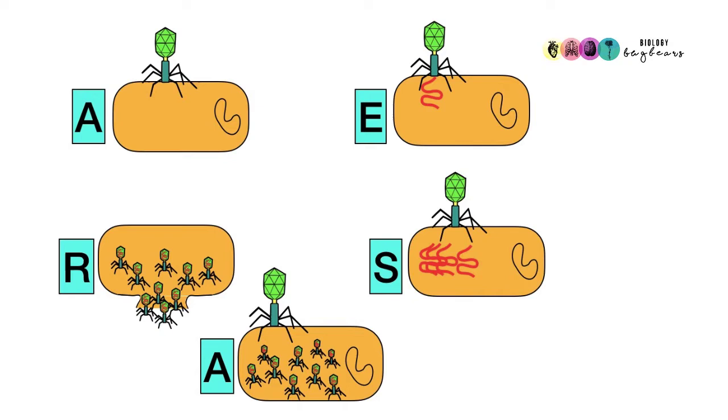Step three is synthesis. In this stage, first the host cell's DNA is inactivated, and the viral nucleic acid sets about taking over or commandeering the host cell's machinery. It's using all the host cell's resources and raw materials to manufacture new nucleic acids and new protein coats.